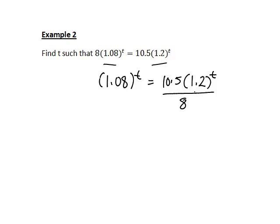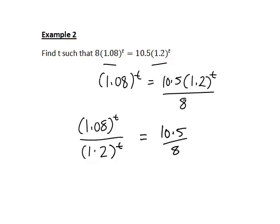So that all our terms involving t are on the one side, divide both sides by 1.2 to the t, which will cancel that from the right hand side and give us 1.08 to the t divided by 1.2 to the t on the left. So that's equal to 10.5 divided by 8.